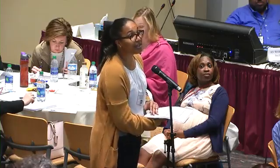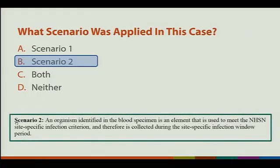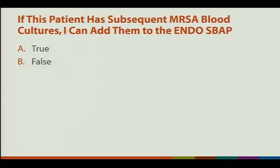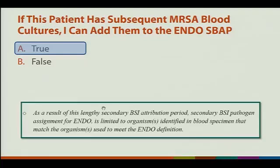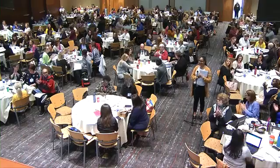What scenario was applied in this case? Scenario two — because the blood was used as an element and the blood was collected during the IWP, it is deemed secondary using scenario two. Last question: if this patient has subsequent MRSA blood cultures, can I add them to the endo SBAP? True. Absolutely. Very good.